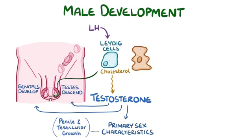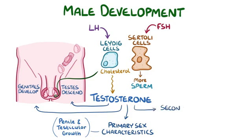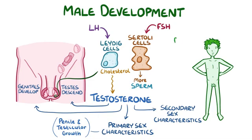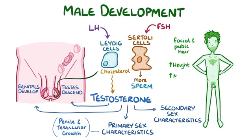In addition, the Sertoli cells of the testes respond to follicle-stimulating hormone by producing more sperm. Increased testosterone also leads to the development of secondary sex characteristics, like growth of facial and pubic hair, increased height and muscle mass, and a deepening of the voice.